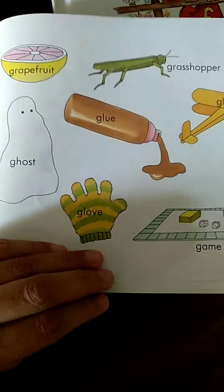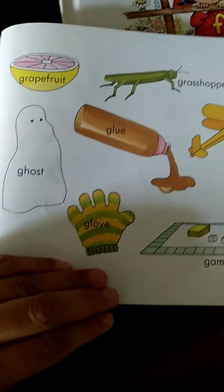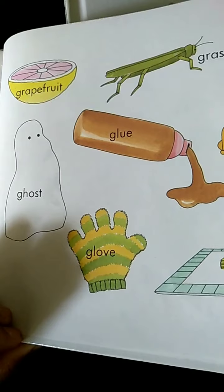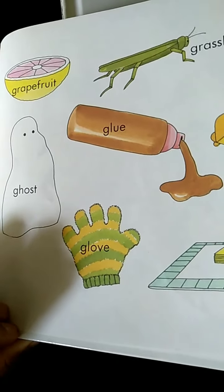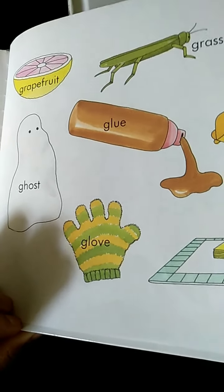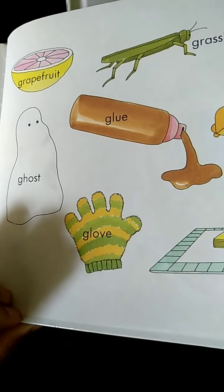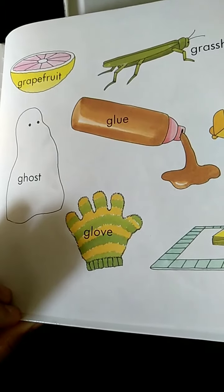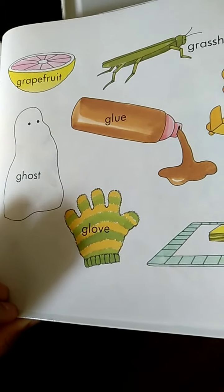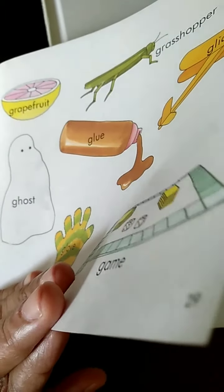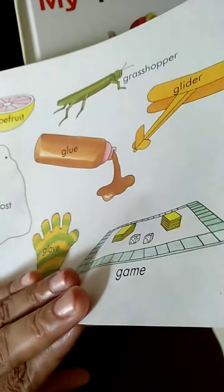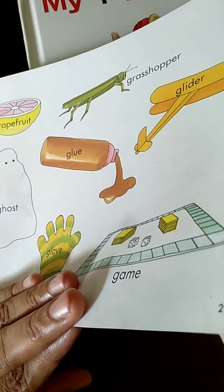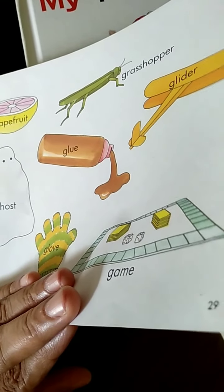Okay, what's the spelling of glow? G-L-O-V-E. What's the spelling of glue? G-L-Q-E. Right. Glider. G-L-I-D-E-R.